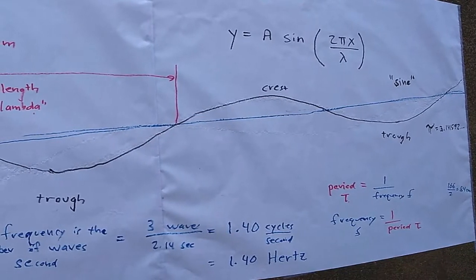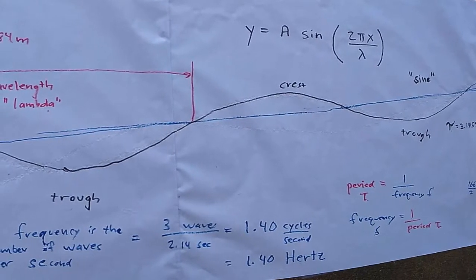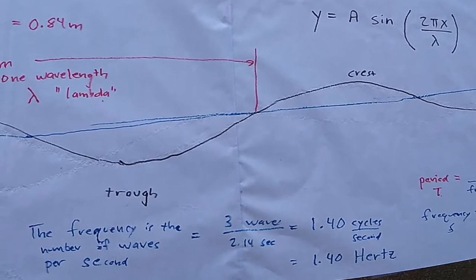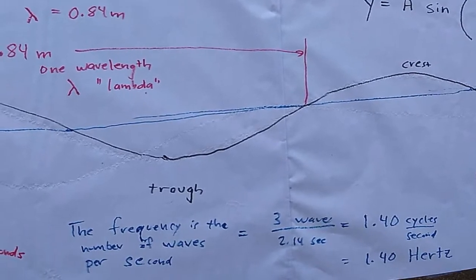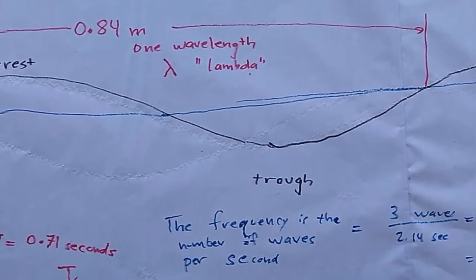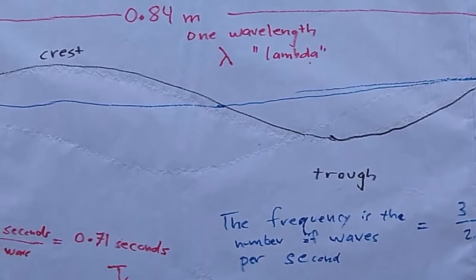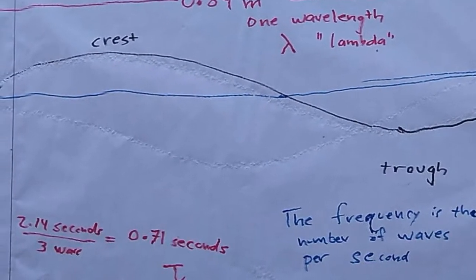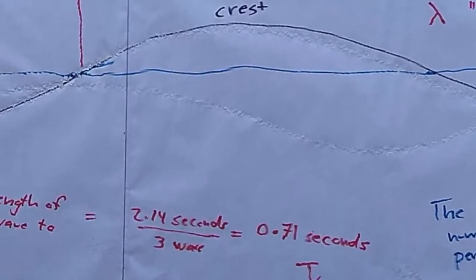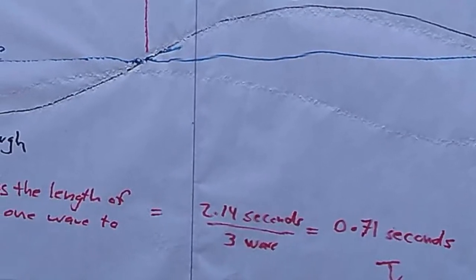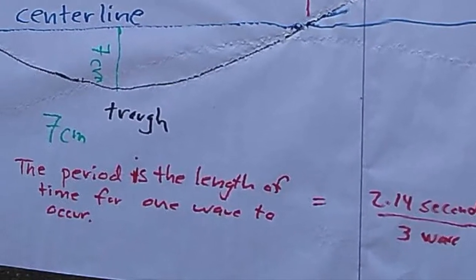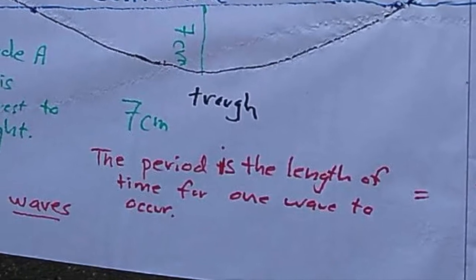While wavelength and amplitude are measurements in space, it took time for the wave to be laid down. In fact, it took 2.14 seconds for the board to cross the paper from the right side to the left side of the paper. 2.14 seconds to lay down three waves. Put another way, there were 2.14 seconds per three waves. That means it took 0.71 seconds per wave. Each wave took 0.71 seconds to lay down. That 0.71 seconds is the period.